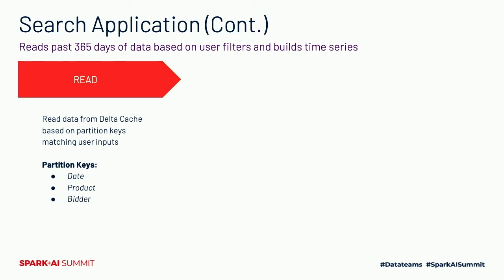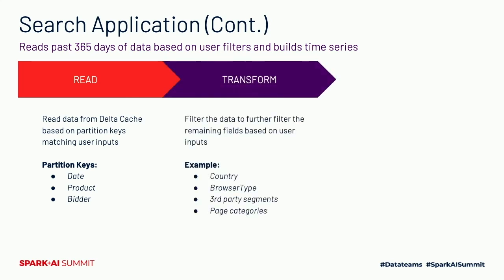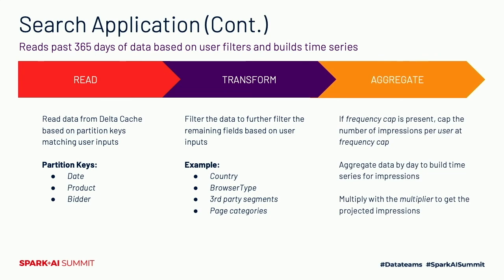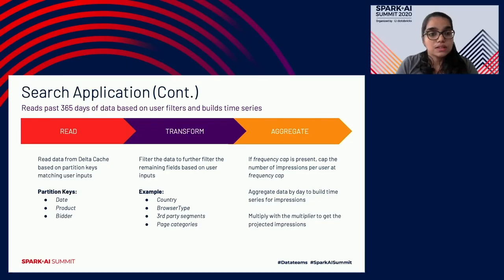Let's revisit the search application workflow. The first step is to filter sample data by user inputs — date, product, and data — which are partition keys for our S3 data, applying a first-level filter based on partition columns. The second step is to further filter based on other inputs such as country, browser type, third-party segments, and page categories. We have 50 to 60 user inputs available through the dashboard. The last step is to aggregate and generate the time series: if a frequency cap is present, we cap impressions per user at the frequency cap, aggregate to build the time series of impressions per day, and multiply sampled impressions by the multiplier to get projected impressions.